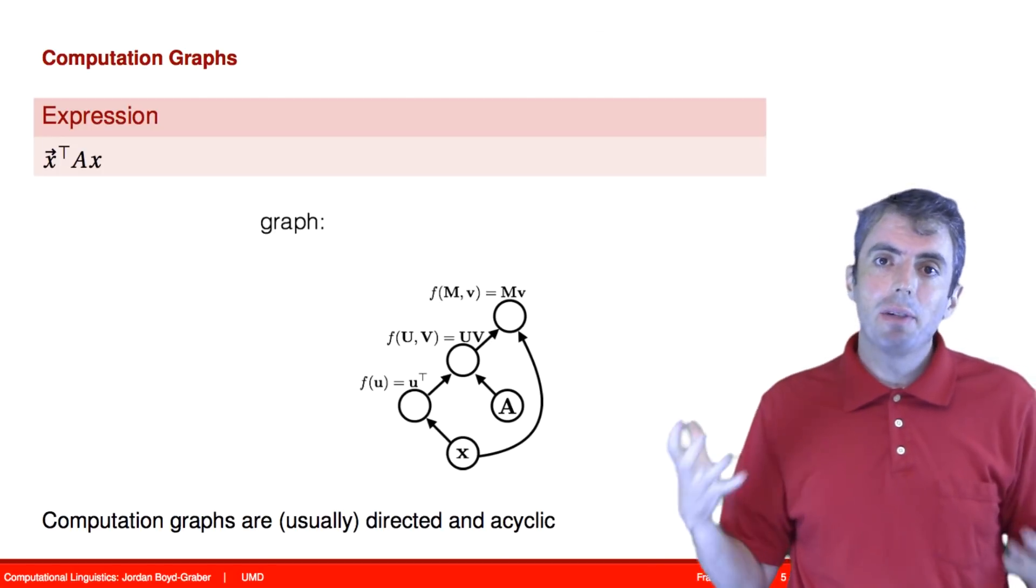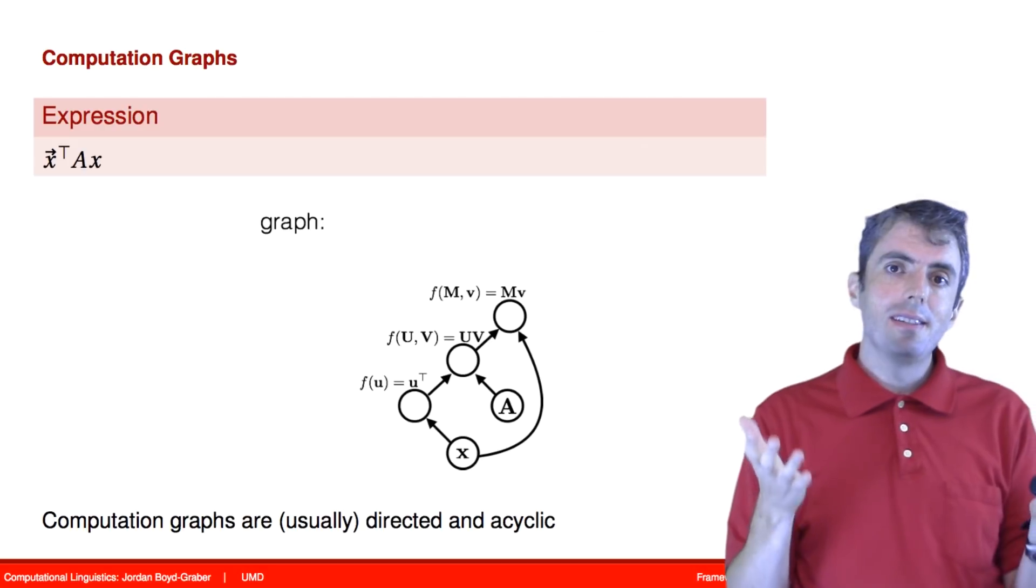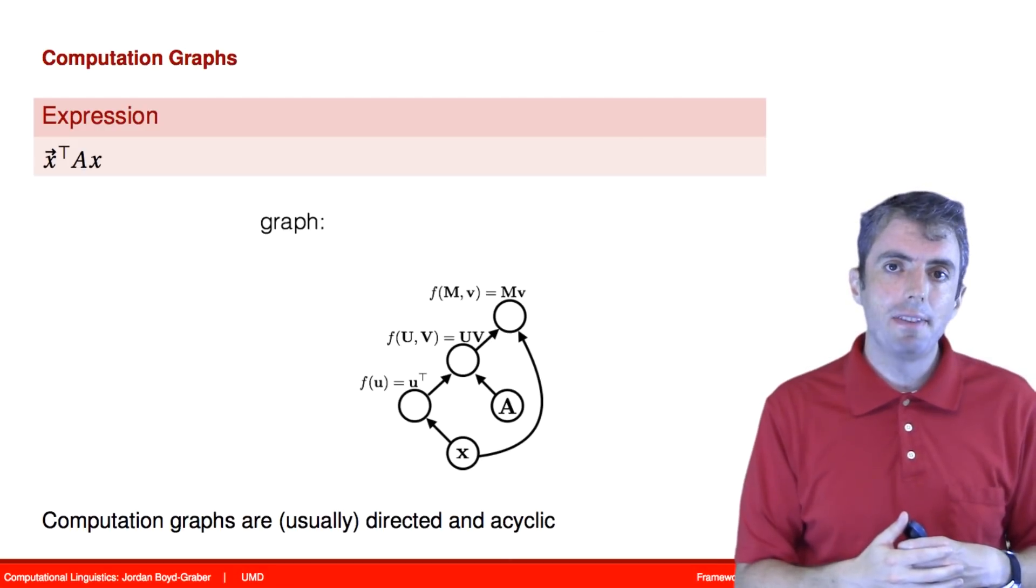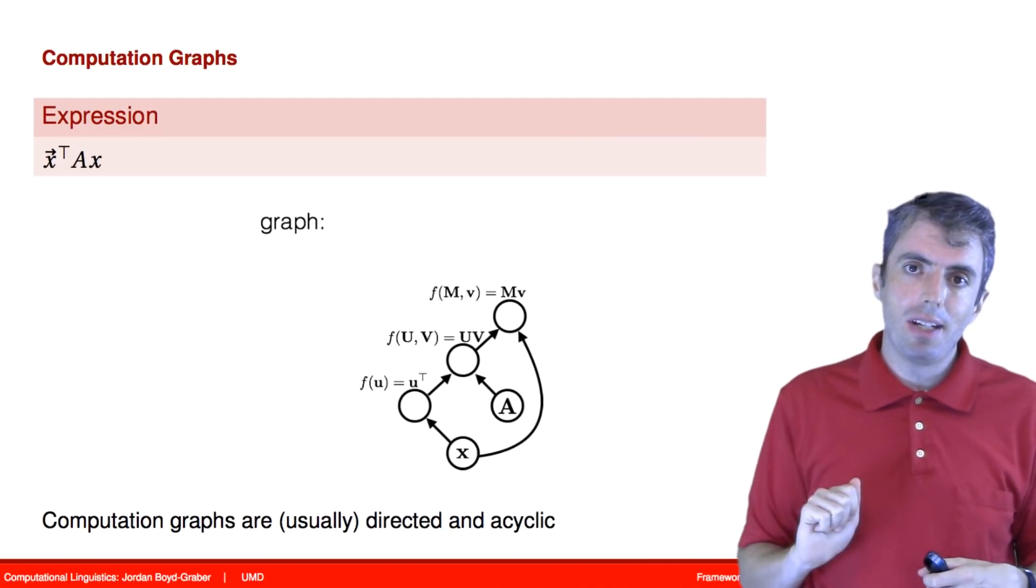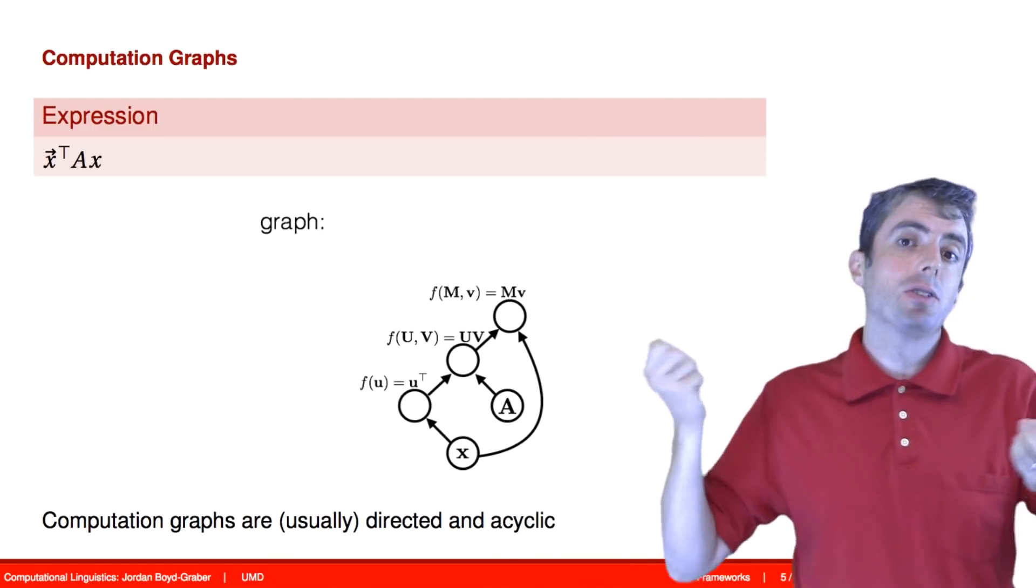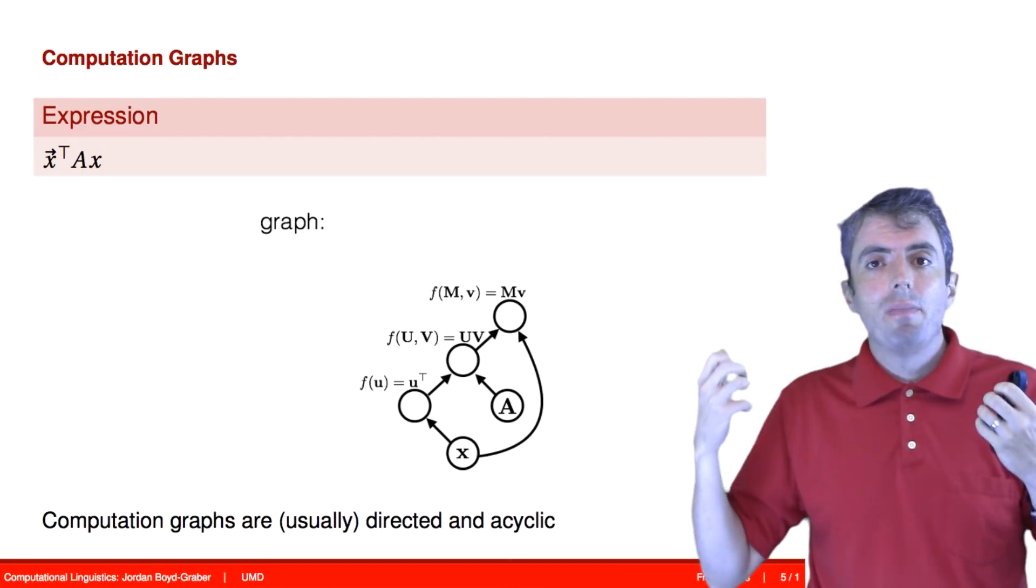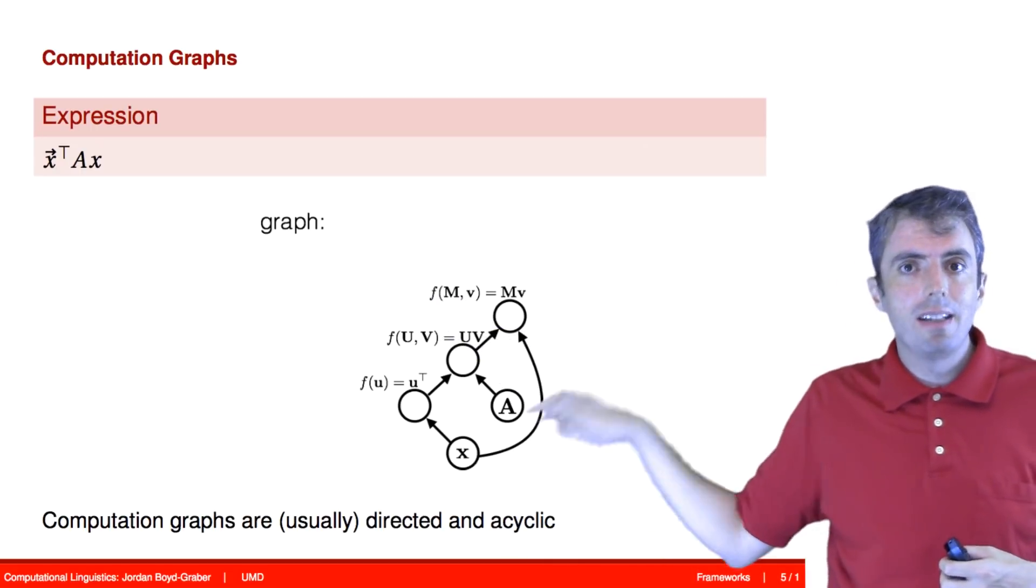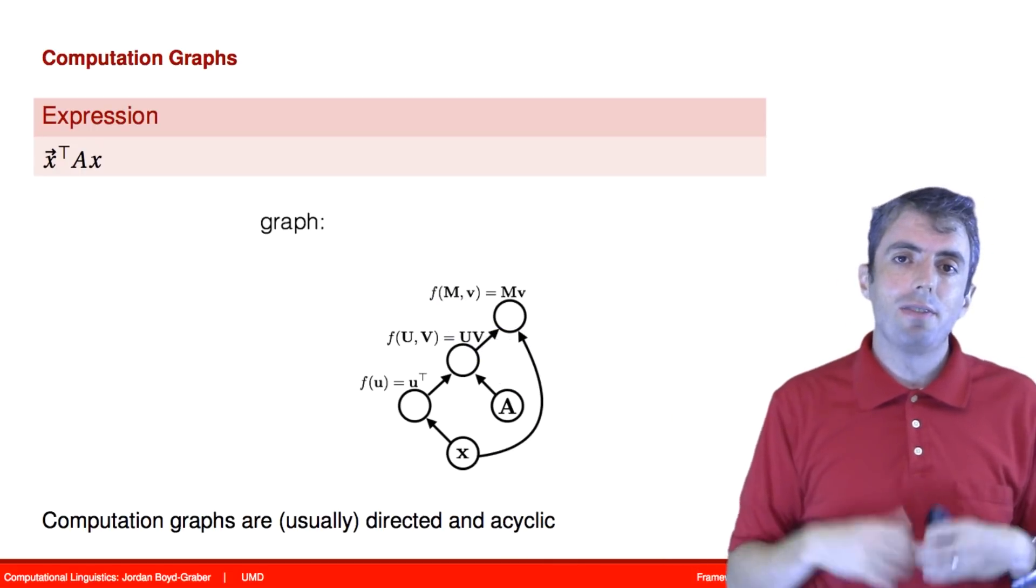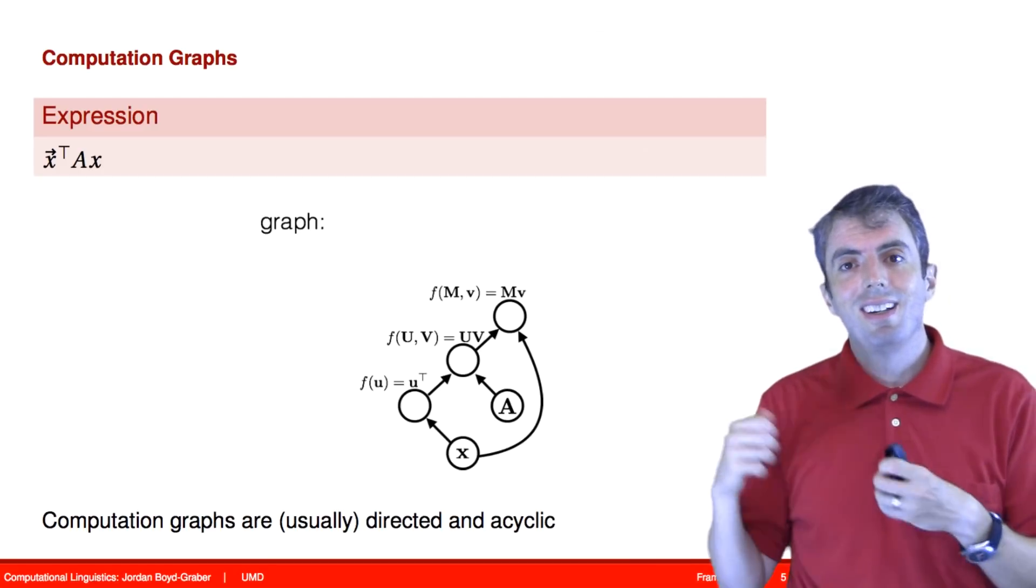So you have some expression. It computes an answer. We're going to represent these expressions as computation graphs. And once we have the output of those computation graphs, we're going to see what the answer should have been. That gives us a loss. We now have a signal that we can use backpropagation to propagate through the rest of the computation graph to update the parameters so we can improve our algorithm.